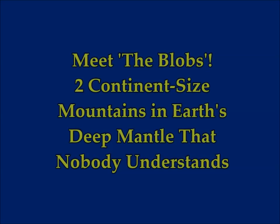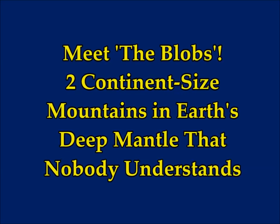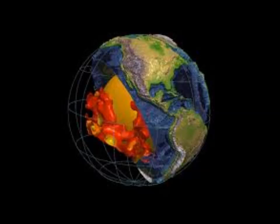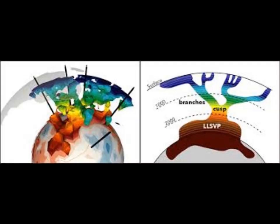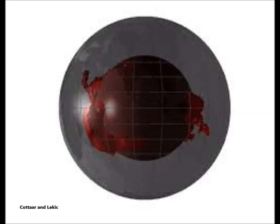Meet the Blobs, two continent-sized mountains in the Earth's deep mantle that nobody understands. And the inner Earth moves mountains, the study says, but that's a topic for another time. This is on Live Science Today by Brandon Spector. Another amazing discovery near the bottom of Earth's mantle are two continent-sized blobs of hot, compressed rock. They're called large, low-shear velocity provinces, LLSVPs.